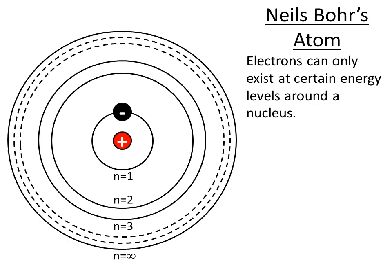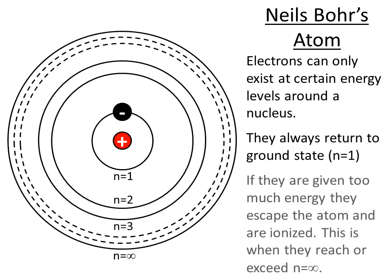It can only exist on those certain ones, or it could exist outside n equals infinity, which means it's been ionized and it's left the atom entirely. It always wants to get back to where it is right now, called ground state, n equals 1. To move outwards, it has to gain energy. We have to give it energy. And when it moves back inwards again, it loses energy. Ground state is where it's got its lowest energy possible.